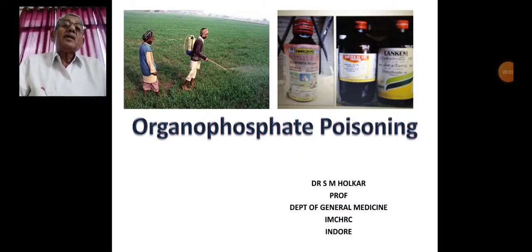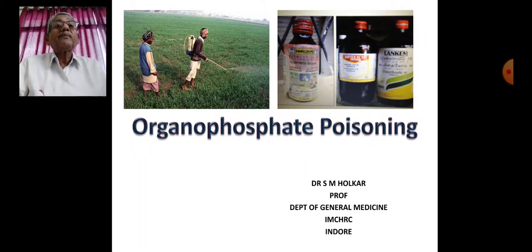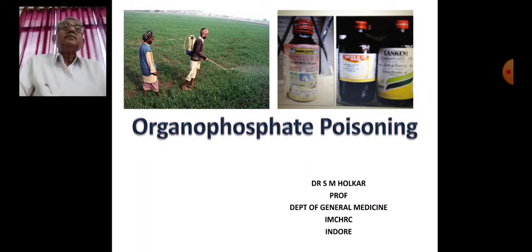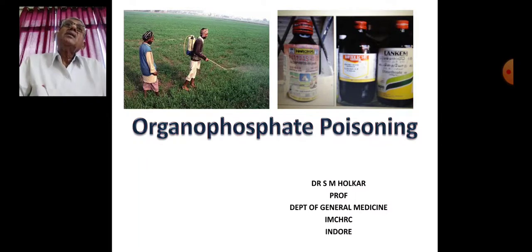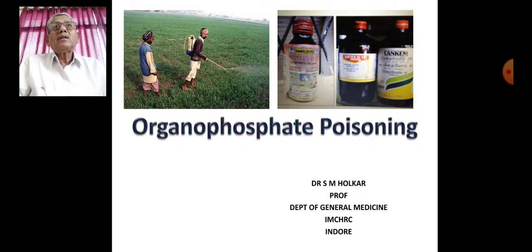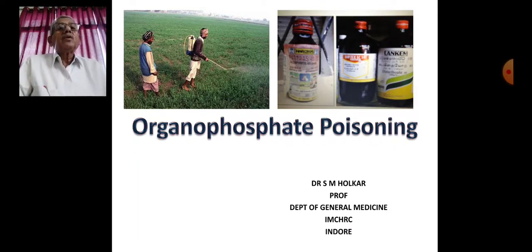Another poisoning which we quite often come across in our medical work is organophosphate poisoning. In India, many farmers — most of the time villagers — whose main occupation is farming use various insecticides and pesticides. Because of lack of knowledge, lack of care, or accidentally or by suicide, we do come across cases of organophosphate poisoning quite often in our wards.